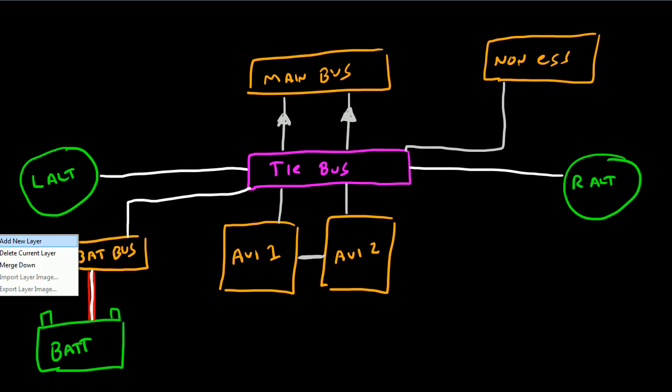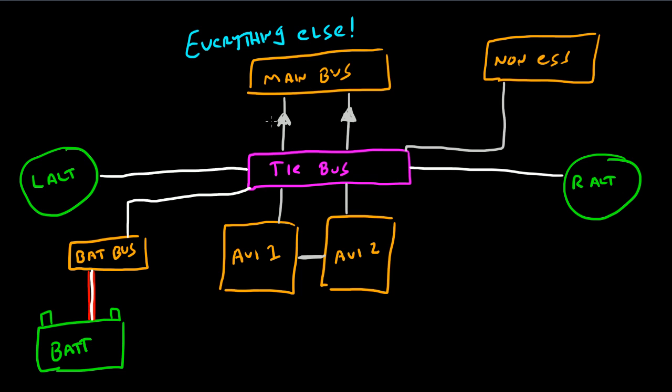And then the main bus is actually really easy because it's everything else. And that includes things like the fuel indicators, the gear system, so power to raise and lower the landing gear, the pitot heat, fuel pumps, and really everything else that's on board the plane. The starter, really everything that isn't environmental or one of the avionics or the clock runs off of the main bus.